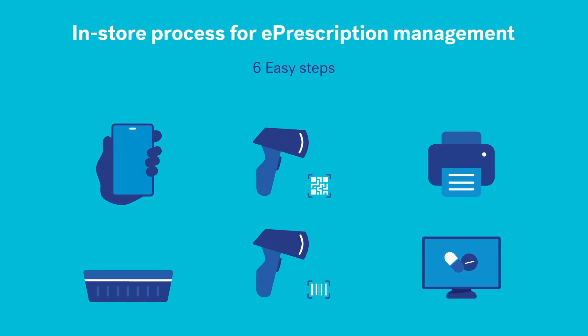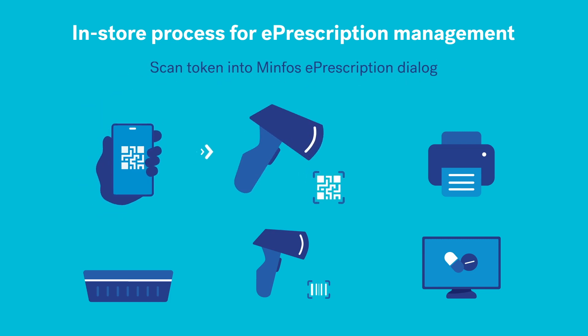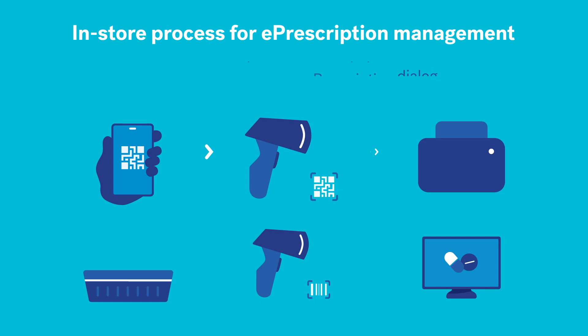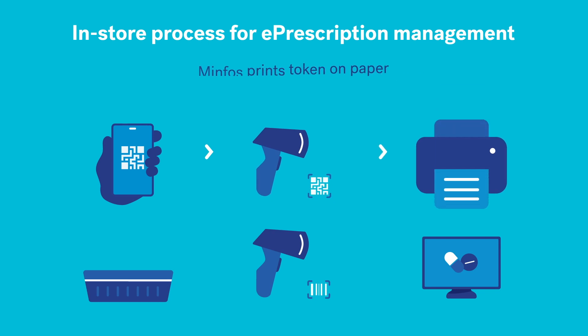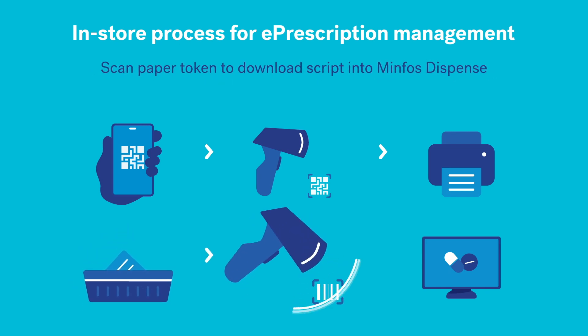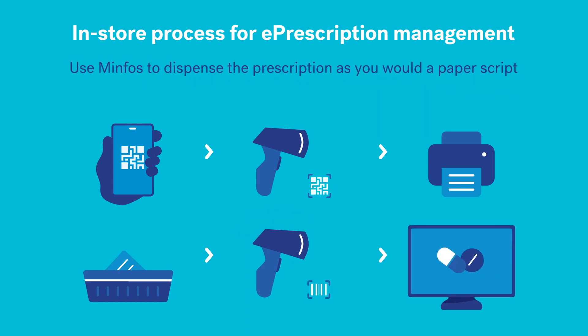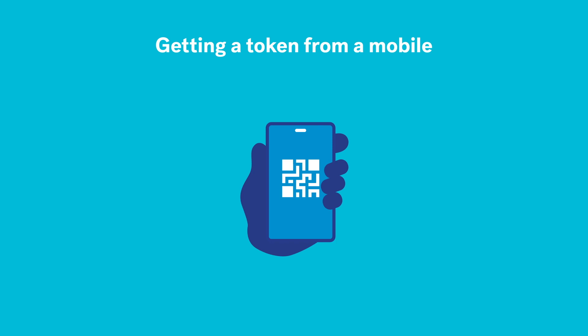When a patient shows you their token on their mobile, scan the token into Minfos. Minfos prints the token onto paper. Next, place the printed token into your script basket with other paper scripts. Scan the paper token to download the script into Minfos Dispense. Now use Minfos to dispense the prescription as you normally would a paper script. It's that simple.